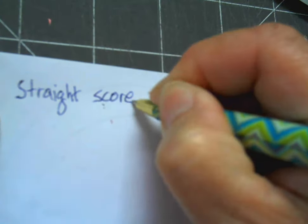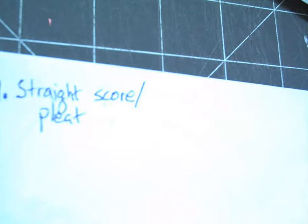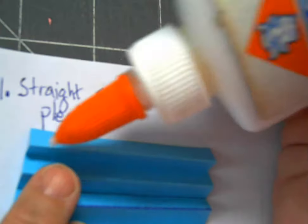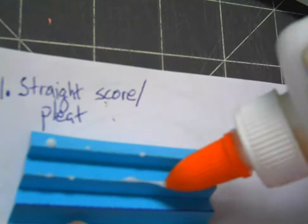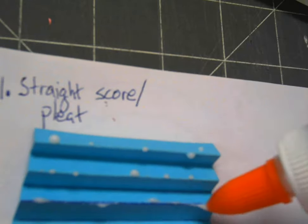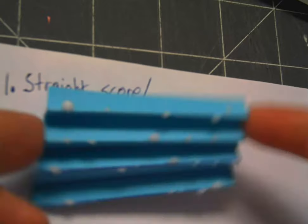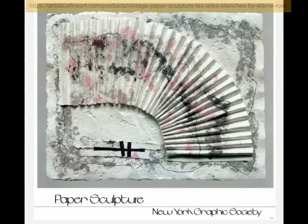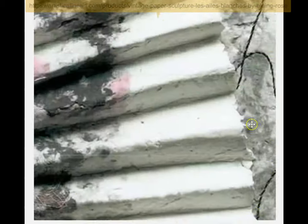What I want you to do is start a page where you're going to store all of these little paper sculpture things. Number one: straight score pleat. And again with the glue, tiny dots just along the places where it will touch the paper. You don't need glue all over the place making the paper weak and wilty.